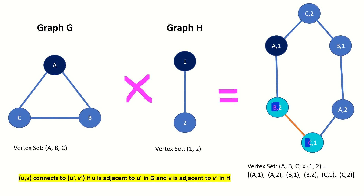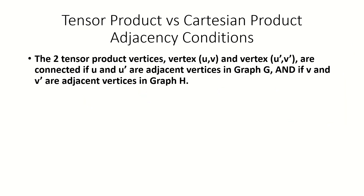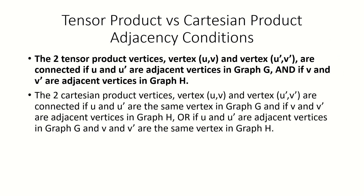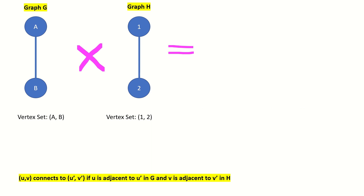This condition for adjacency is highlighted in yellow below. Think about how the conditions for adjacency in a tensor product differ from those in a Cartesian product of graphs. Let's now work through some examples of tensor products of graphs. What is the tensor product of two path graphs with two vertices each?